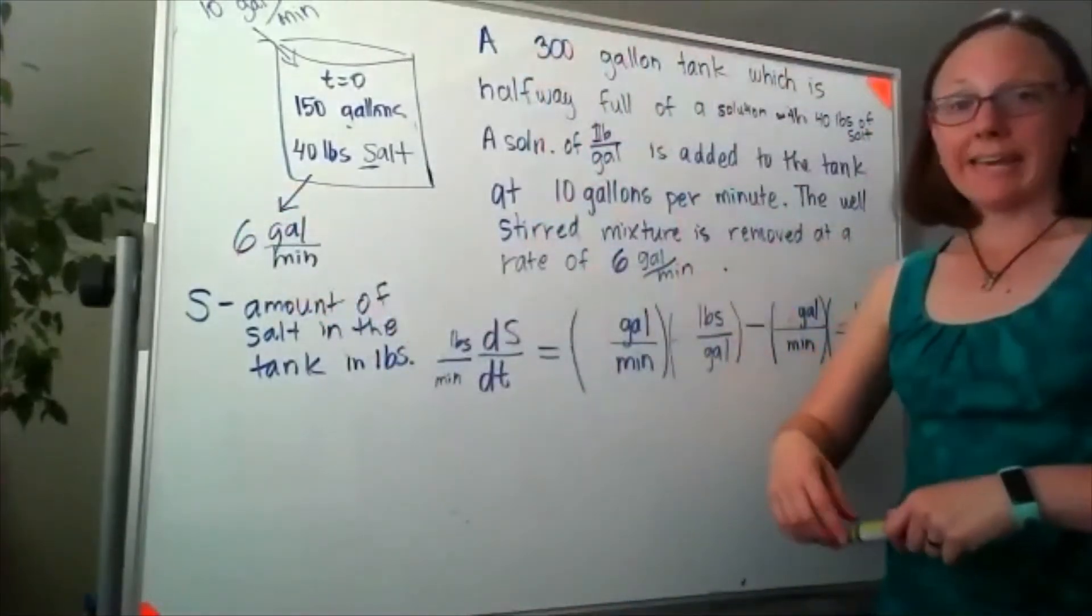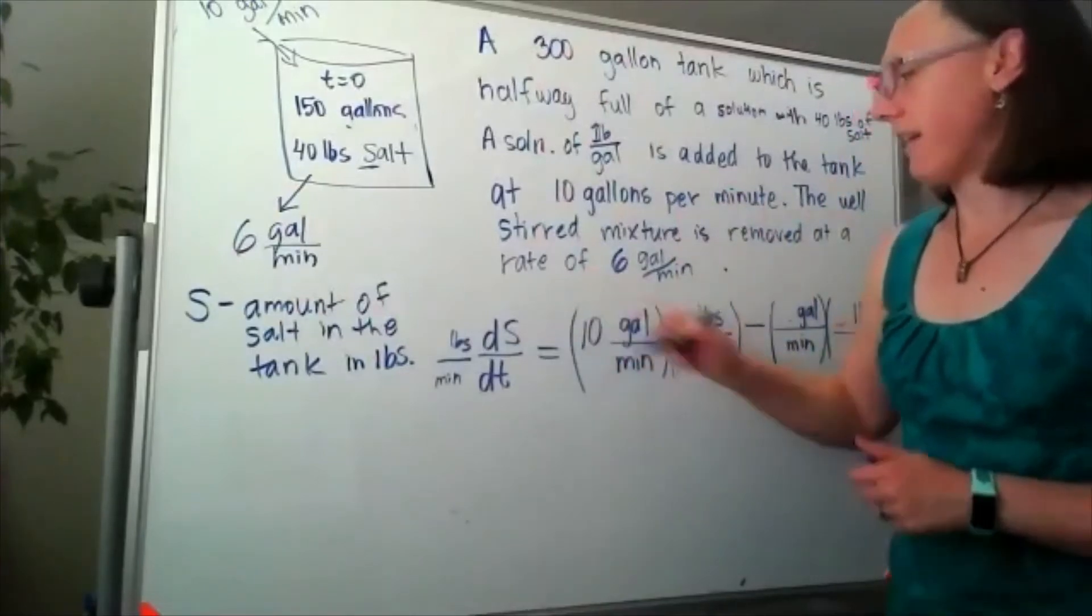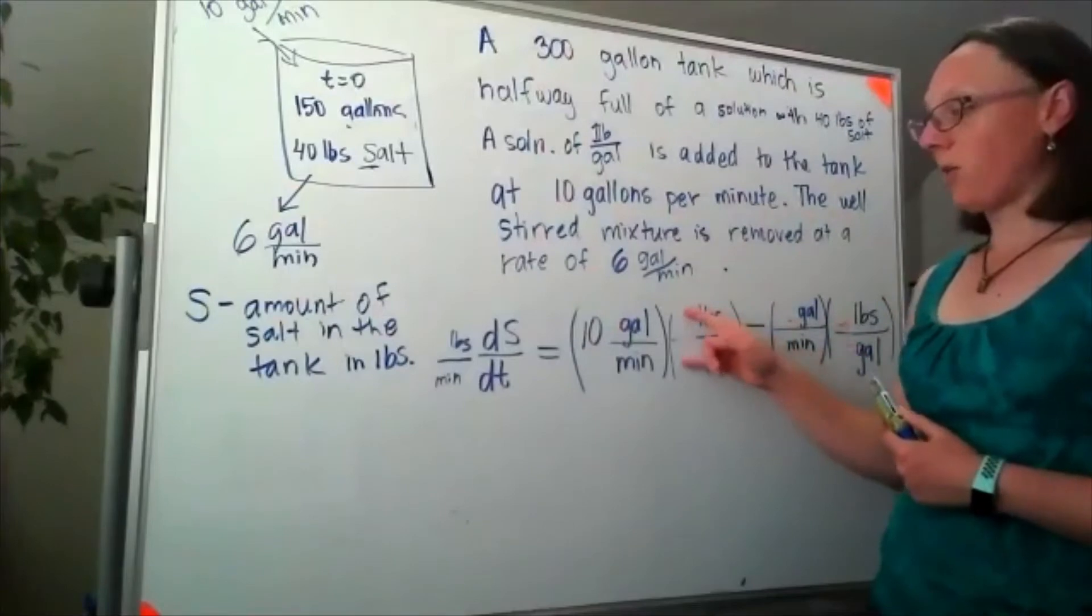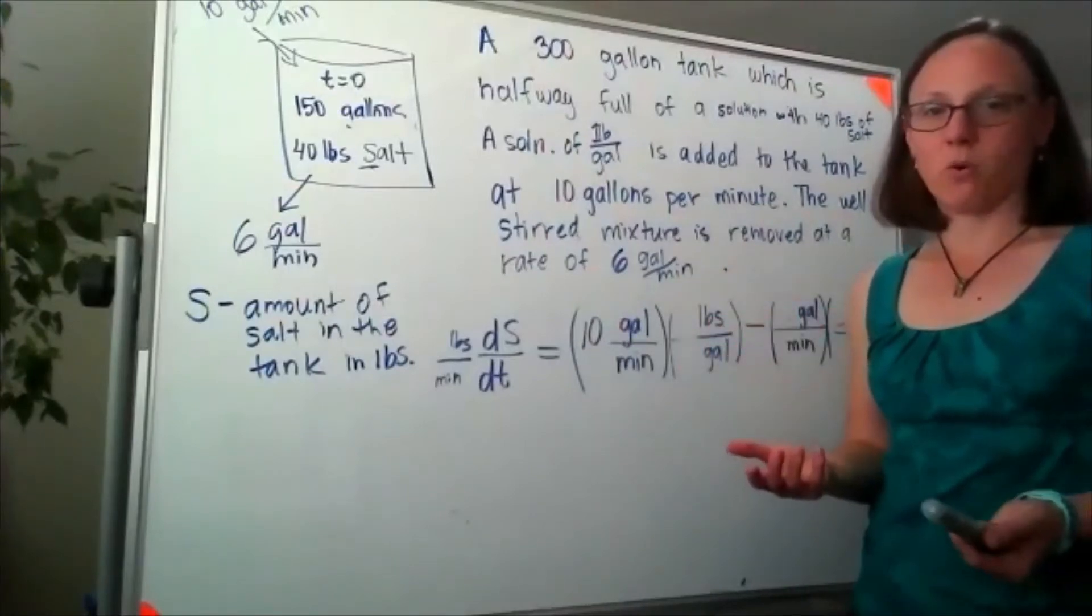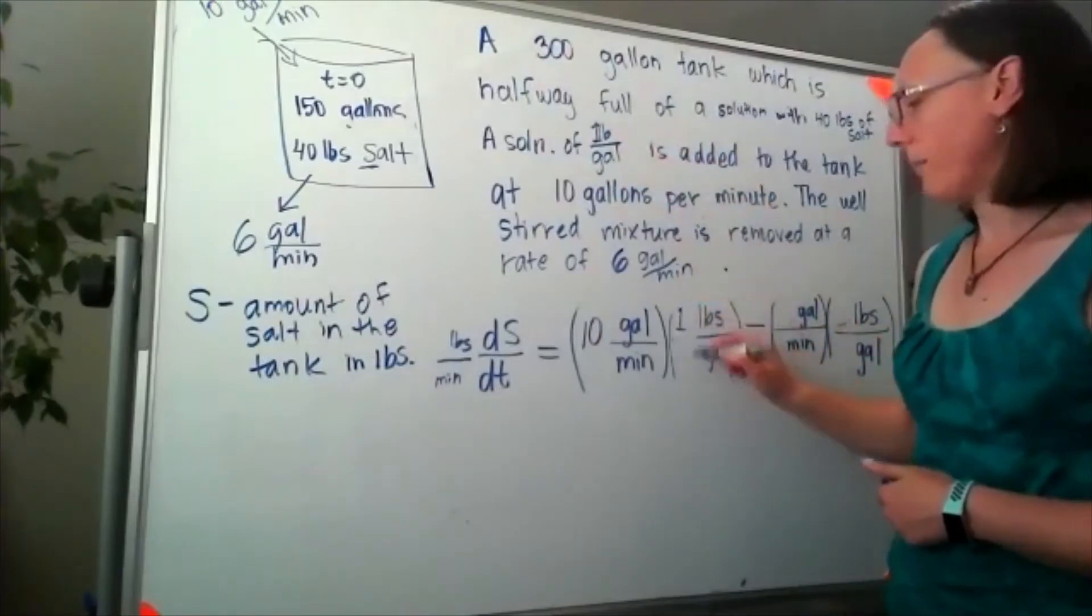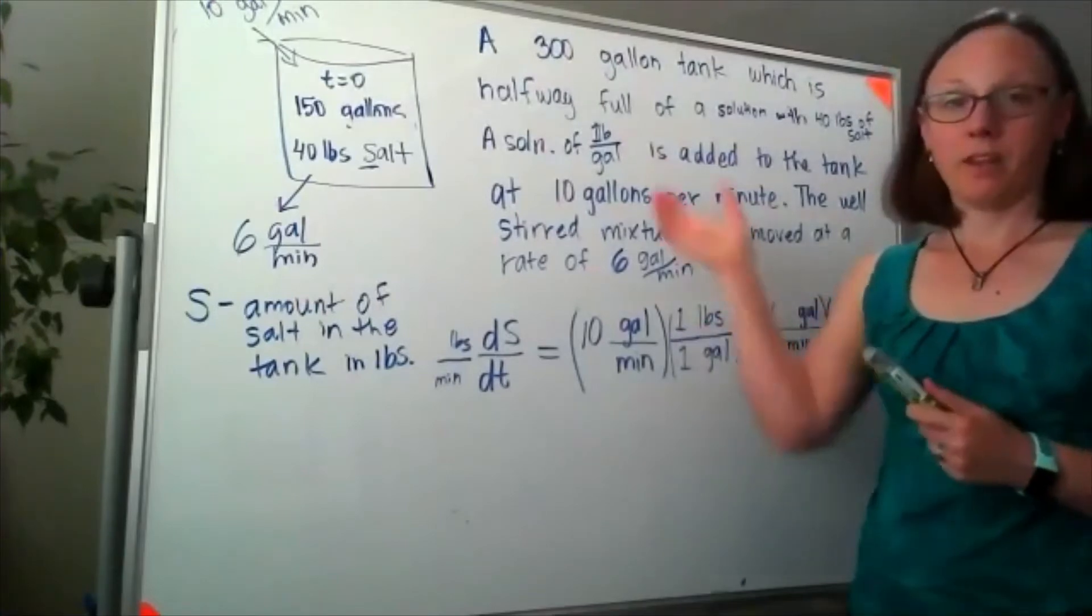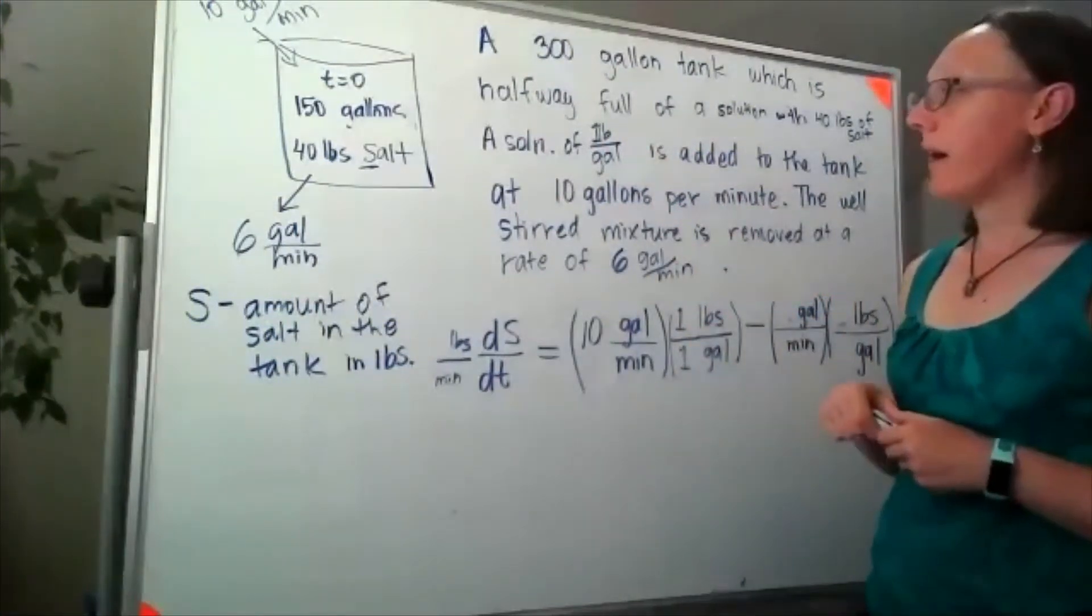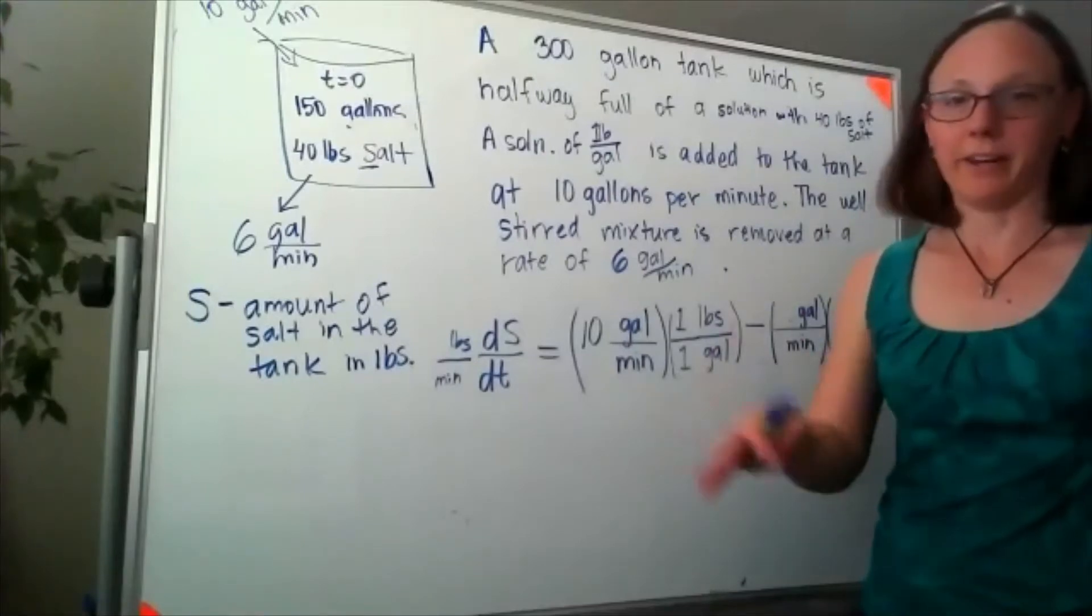So let's think about what's coming in. Well, it's still coming into the tank at 10 gallons per minute, but now instead of those zero pounds per gallon that we were expecting for the fresh water, now I know that we have one pound per gallon in. Wow, I think it'd be hard to put a pound of salt in a gallon of water, but I'm gonna ignore that for a minute.